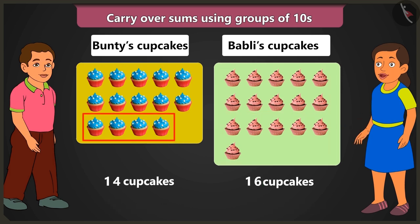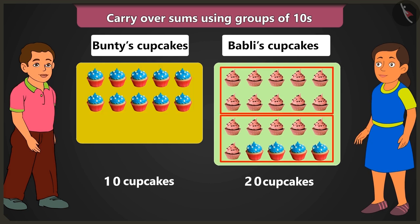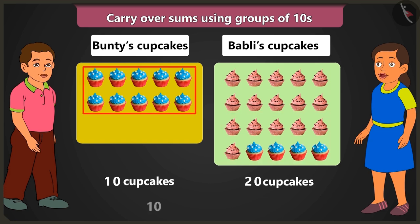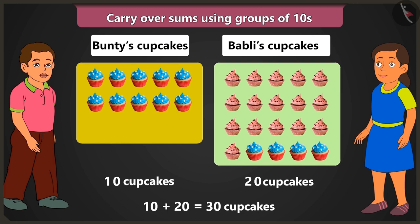If you give me four of your cupcakes, then you will be left with one ten cupcakes, and then you will be left with two tens, that's twenty cupcakes. So in this way your ten and my twenty will add up to three tens, that's thirty cupcakes in total. Oh wow!